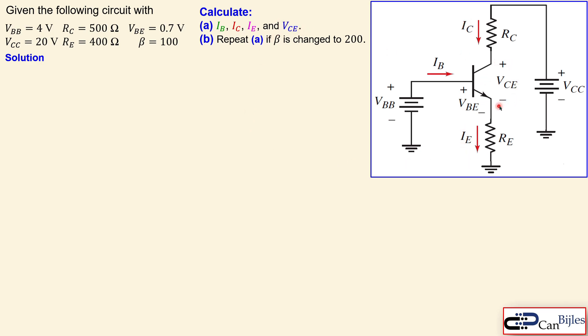What we'd like to calculate is IB, IC, and IE — the base current, collector current, and emitter current — and also VCE, the collector-emitter voltage. So four unknowns. We repeat the process for beta equal to 200. This is the same setup as example two but using a different configuration with emitter resistance instead of base resistance.